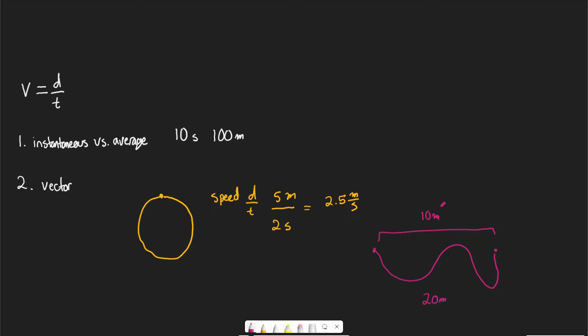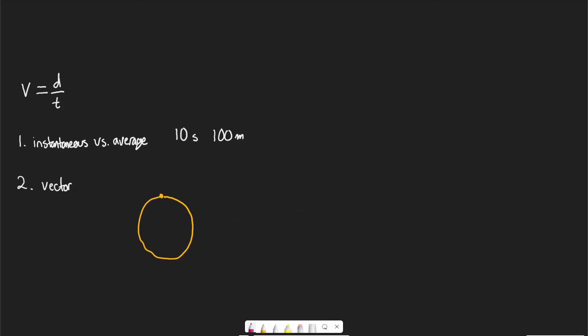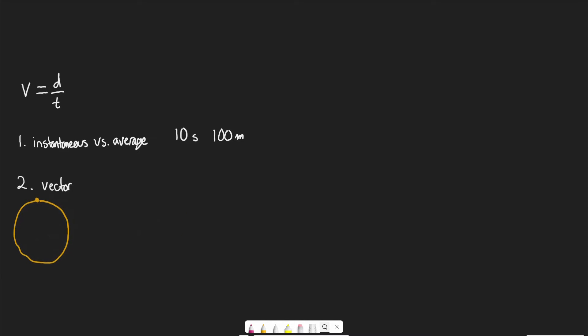This is the definition of a vector quantity — the vector quantity takes into account the direction traveled and our starting and ending points, whereas speed doesn't care. For the MCAT, we don't really need to know this in too much detail. The important thing to be aware of is the difference between a vector and a scalar quantity.